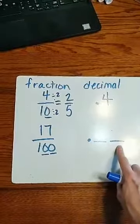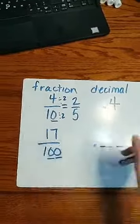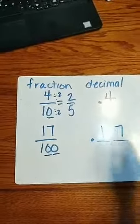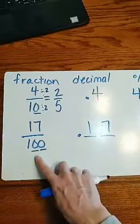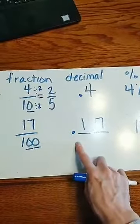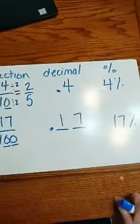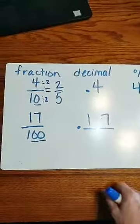So my second one is my hundredth place, and I fill this number in, going out to my hundredth place. So 17 one-hundredths is written as 0.17 or 17%.